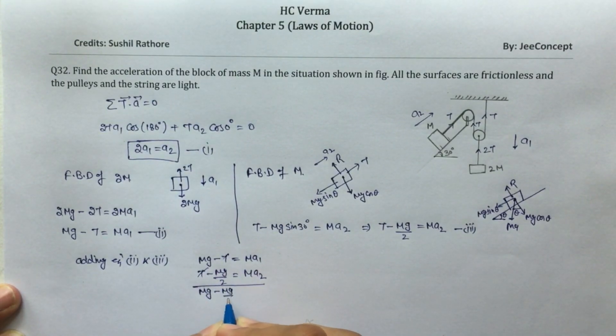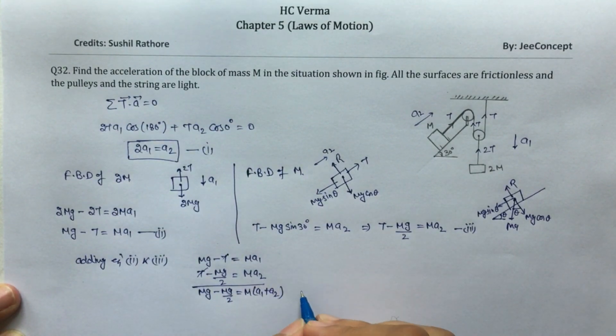So this is going to be mg minus mg by 2 equals m times a1 plus a2. m will be common and cancel out, we will get g equals a1 plus a2.